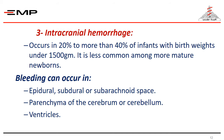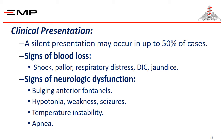Intracranial hemorrhage is the most serious lesion, occurring in about 20 to 40% of infants with birth weight under 1.5 kg. It is less common among more mature newborns. Bleeding can occur in the epidural, subdural, subarachnoid space, parenchymal, intracerebral, cerebellar, or intraventricular regions. Up to 50% of cases may be silent, but if manifestations occur they include shock, pallor, respiratory distress, DIC, jaundice, signs of neurological dysfunction, bulging anterior fontanel, hypotonia, seizures, temperature instability, and apnea.